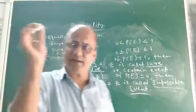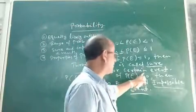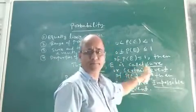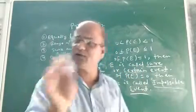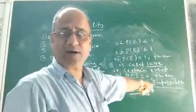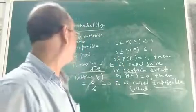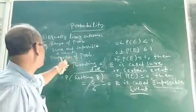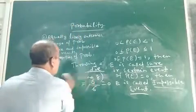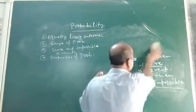An event is said to be impossible if its probability is 0. An event is said to be sure or certain if its probability is 1. So in this class, we came to know two new things: impossible event and sure or certain event. Now let us discuss the properties of probability. What are the properties of probability? It is very simple.